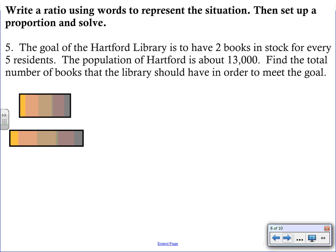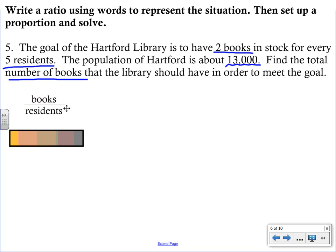If we look at this problem, it says the goal of the Hartford Library is to have 2 books in stock for every 5 residents. So that's some key information. It looks like we might be comparing books to residents. Then it goes on to say the population of Hartford is about 13,000. And then it asks us to find the total number of books that the library should have in order to meet the goal of two books for five residents. So we have some things that I want you to think about first. I mentioned we want to have that ratio. So I'm going to be comparing books to residents.